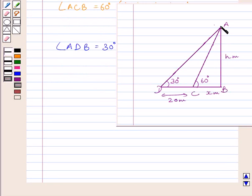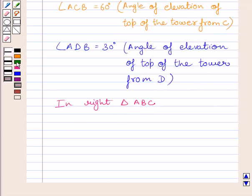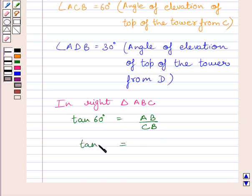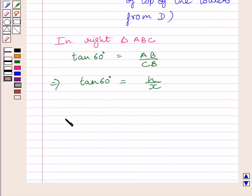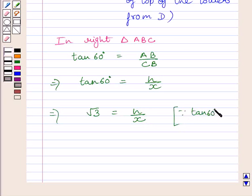First of all, let us consider triangle ABC. In right triangle ABC, tan 60 degrees is equal to AB upon CB. We know AB is equal to H meters and CB is equal to X meters, so we can write tan 60 degrees is equal to H upon X. Since tan 60 degrees equals root 3, we get root 3 equals H upon X. Let us name this expression as 1.